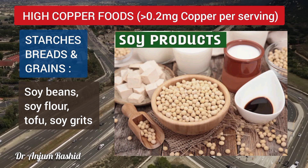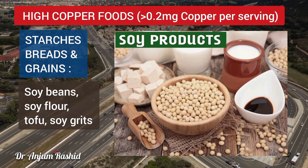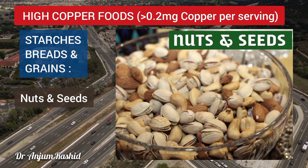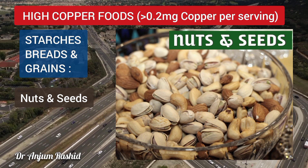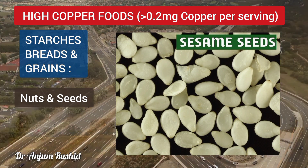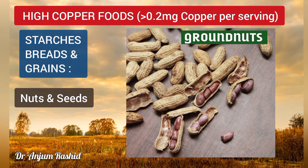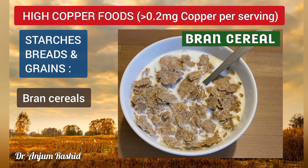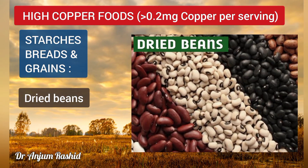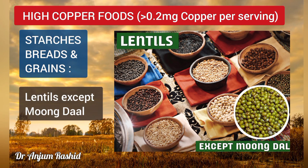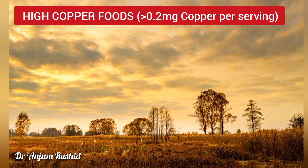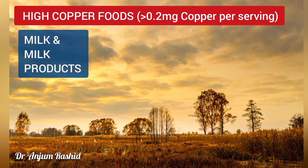High copper nuts and seeds include almonds, cashew nuts, sesame seeds, groundnuts, walnuts, and similar items. Also high in copper are bran cereals, and dried beans and lentils — except moong dal.